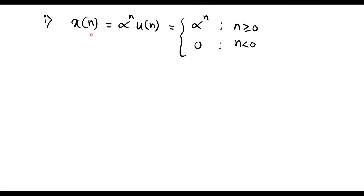X of n is equal to alpha power n, u of n, where X of n is defined. That is, X of n exists for n greater than or equal to 0, and its value is 0 for n less than 0. Here we can observe that X of n is a decaying signal — that is, an exponentially decaying signal. Here it is said that n is greater than or equal to 0.